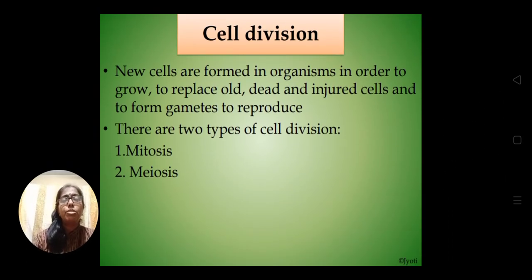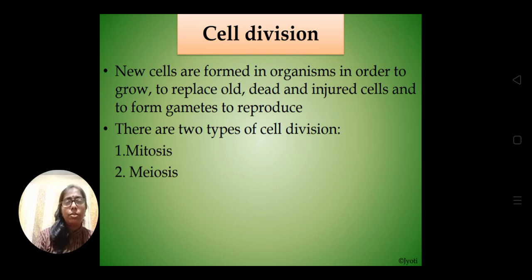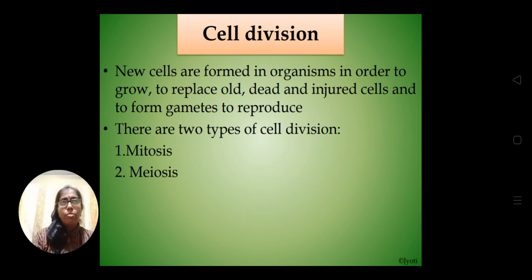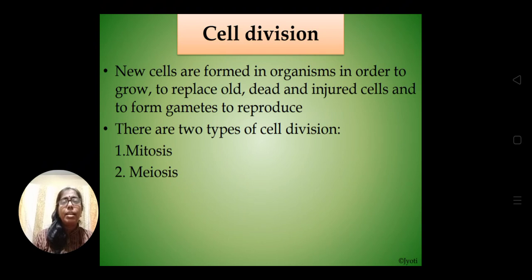Now let's come to cell division. Details of cell division are not required for Class 9, so I will briefly tell you what cell division is and what the different types are. New cells are formed from pre-existing cells — the cell prepares itself, then divides, and the number of cells increases. We can say it is the reproduction of the cell; new cells are formed from old cells.